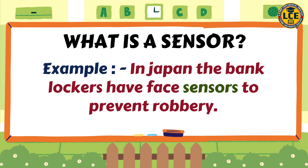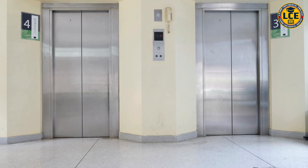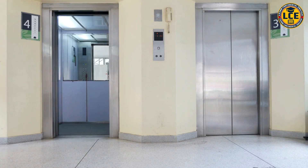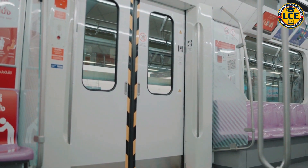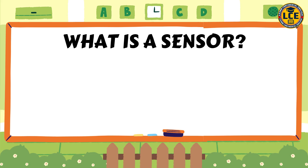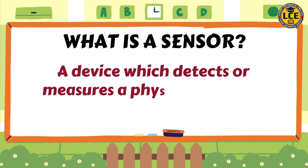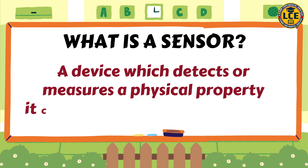Japan mein jo bank lockers hote hain unme special face sensors hote hain taaki robbery ko prevent kiya ja sake. Sabse relevant example jo aap sliding doors mein aur lift mein dekhte ho — aap wahan jaate ho aur wo apne aap khul jaata hai. Hum koi button nahi dabate, but it automatically opens for you. Wo isliye hota hai kyunki lift aur sliding doors mein sensors lage hote hain. So S-E-N-S-O-R — a device which detects the presence of a physical property, records or responds to it.